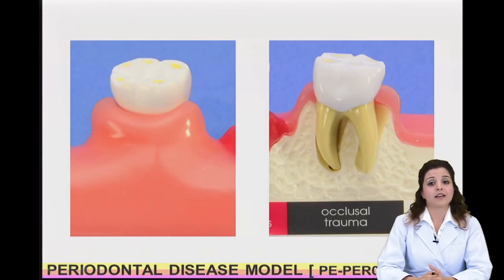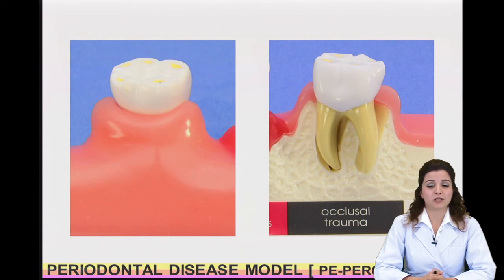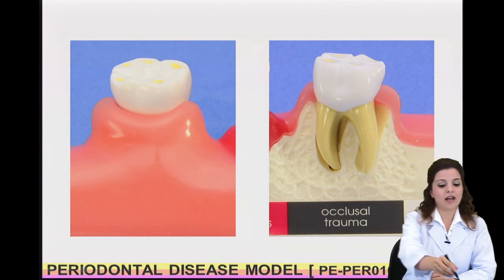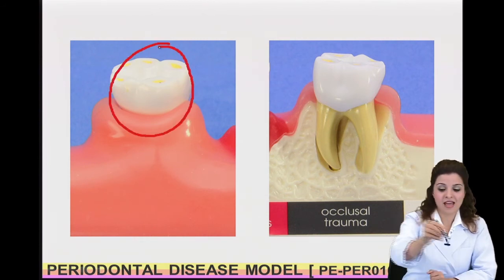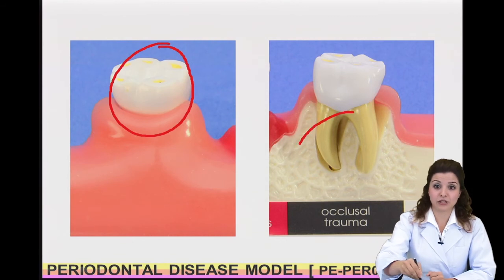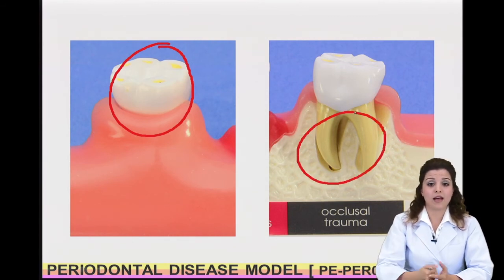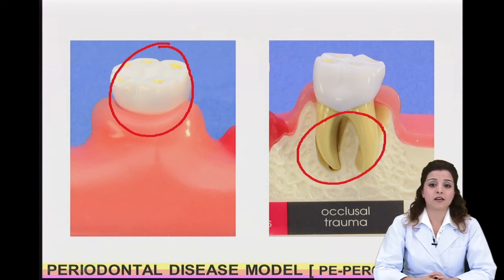Another interesting indication of this model is for patients with bruxism — a worn-out occlusion and displaced roof that can help you explain the side effects of bruxism to your patients.